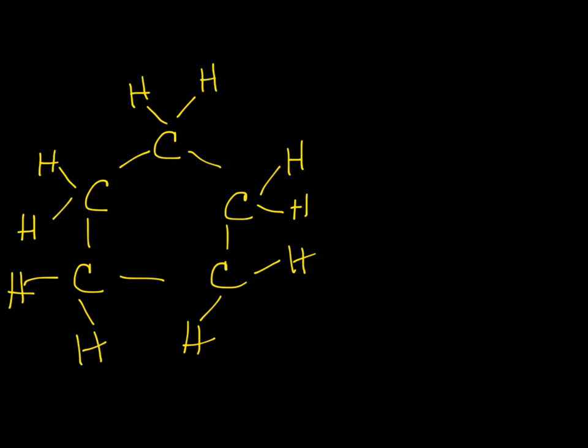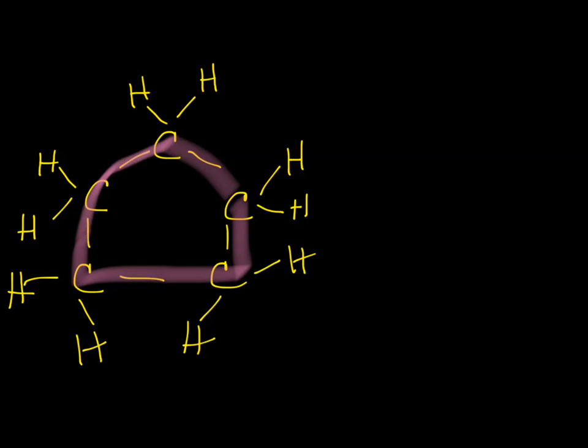All right, so we got that guy there. So just like we did with the straight chain alkanes, count the number of carbons in the parent chain. So we've got one, two, three, four, five, right? We have five carbons.